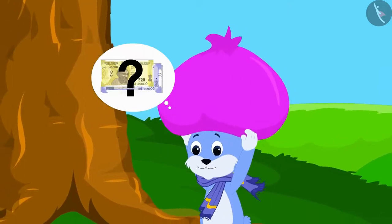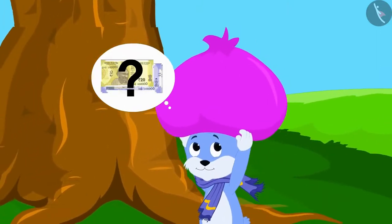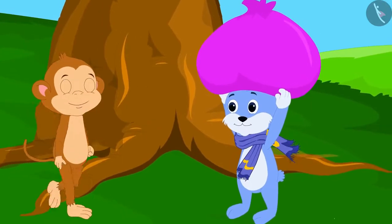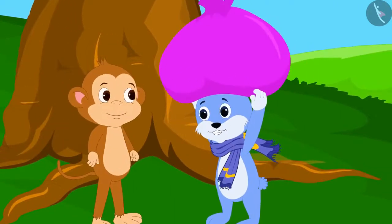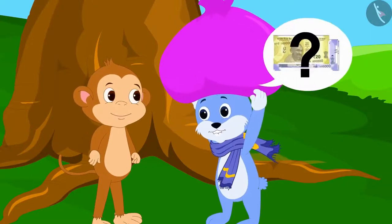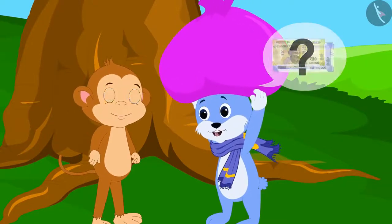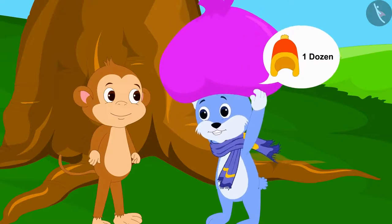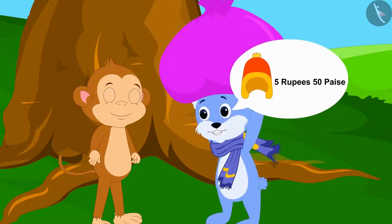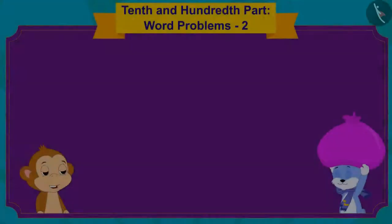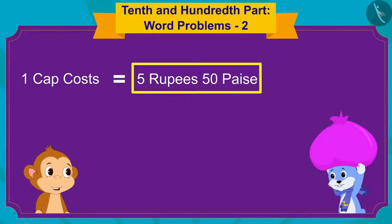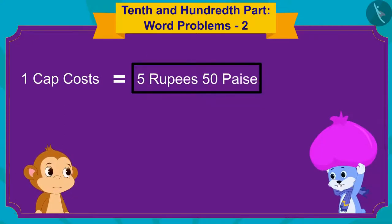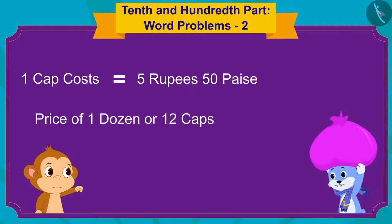Just then Babban was passing by. Bunny stopped Babban and asked him: Babban, how much money will I get for one dozen caps if I sell one cap for five rupees and fifty paise? Babban replied: It is very easy, Bunny. A cap costs five rupees and fifty paise.